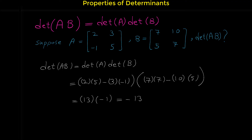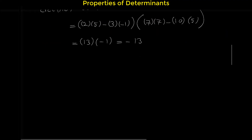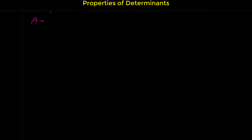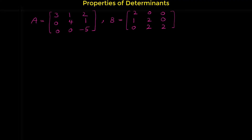Let me show you another example. We are given matrix A, a 3 by 3 upper triangular matrix with elements 3, 1, 2 in the first row; 0, 4, 1 in the second row; 0, 0, -5 in the third row. Matrix B is 2, 0, 0 in the first row; 1, 2, 0 in the second row; 0, 2, 2 in the third row. We are asked to find the determinant of A times B transpose.